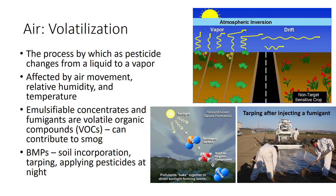A number of pesticides, such as emulsifiable concentrate formulations and all fumigants, are considered volatile organic compounds because they readily volatilize in the atmosphere. In the presence of sunlight, VOCs react with nitrogen oxides to produce ozone, which can contribute to smog, respiratory irritation, and plant injury.